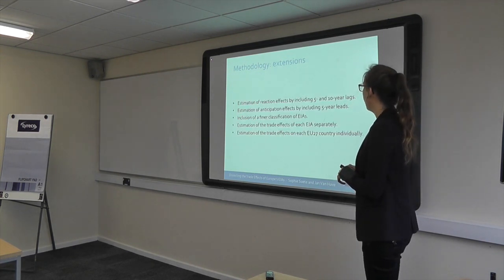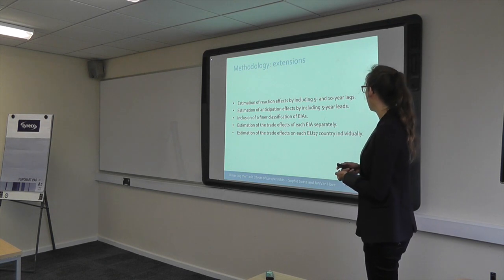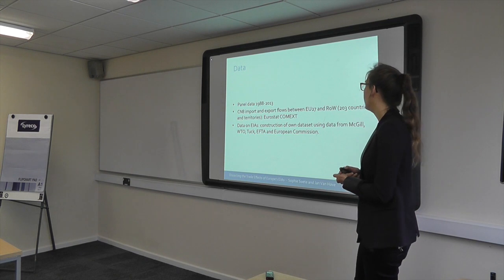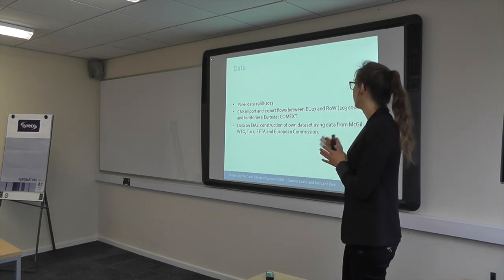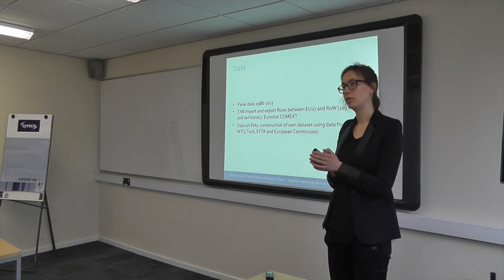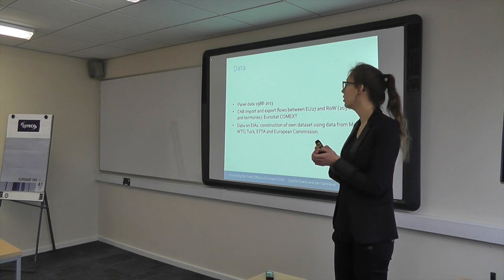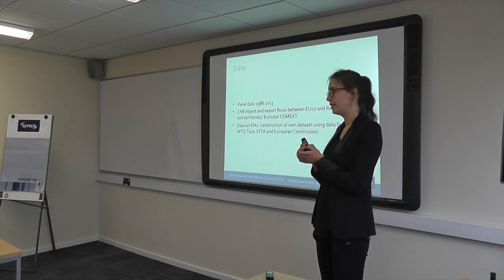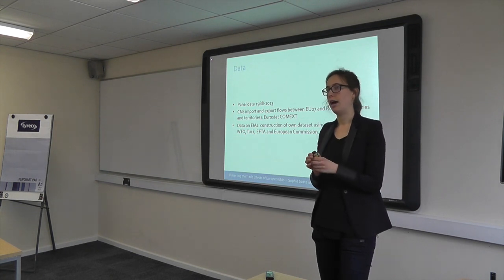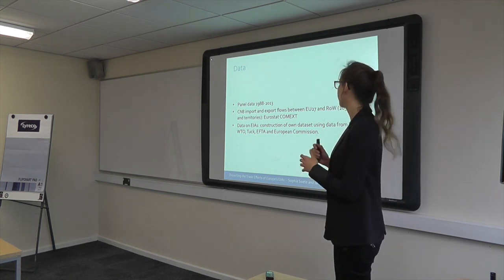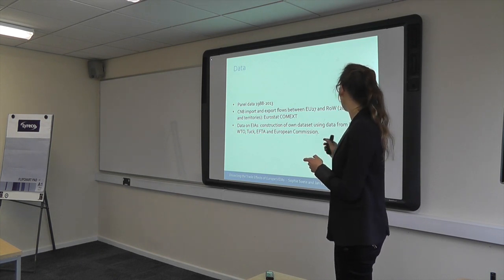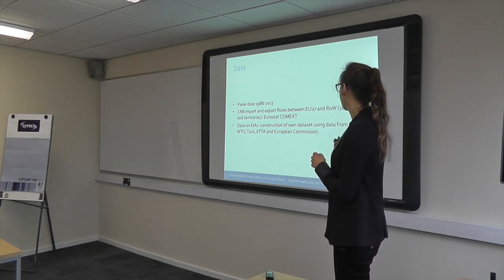Then we do some extensions: we include lags and leads, look at the alternative classification, and then at separate agreements and countries. The data runs from 1988 to 2013, from Eurostat's COMEXT database — import and export trade flows between the EU-27 and the rest of the world at the CN8 level, which is very detailed product-level data allowing us to construct high-quality intensive and extensive margins. Data on trade agreements comes from WTO, EFTA, and the European Commission.